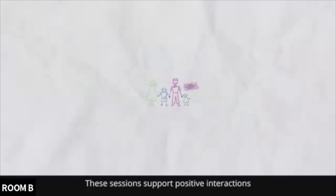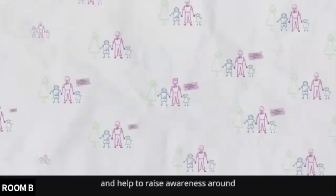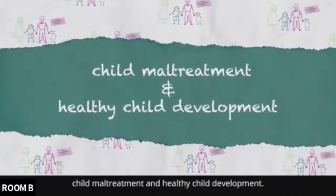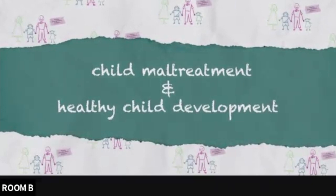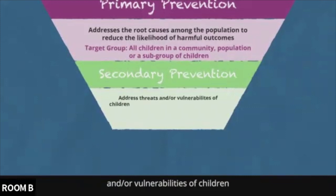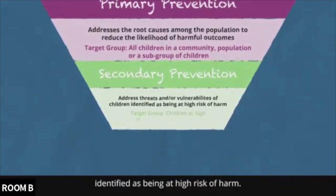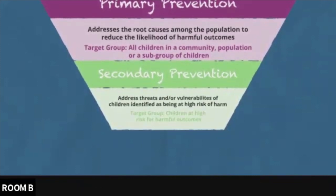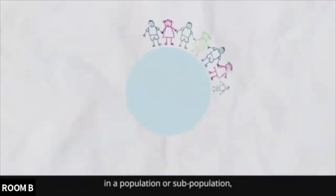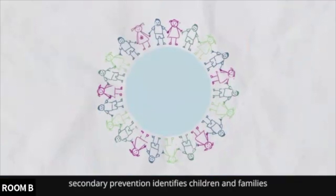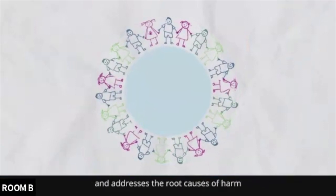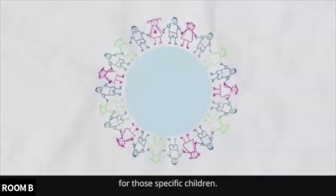These sessions support positive interactions among family members and help to raise awareness around child maltreatment and healthy child development. Secondary prevention addresses a specific threat and/or vulnerabilities of children identified as being at high risk of harm. Rather than targeting all children in a population or sub-population, secondary prevention identifies children and families at high risk of harmful outcomes and addresses the root cause of harm for those specific children.